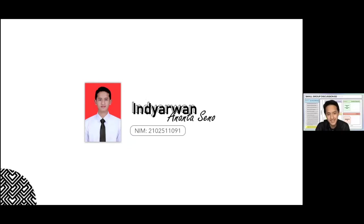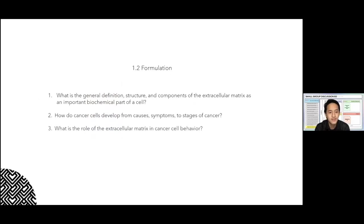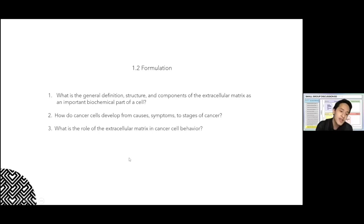My name is India Ruan Anantaseno, with the last three-digit NIM 091. The formulations of the student project are: first, what is the general definition, structure, and component of the extracellular matrix as an important biochemical part of the cell? Second, how do cancer cells develop from causes, symptoms, to stages of cancer?